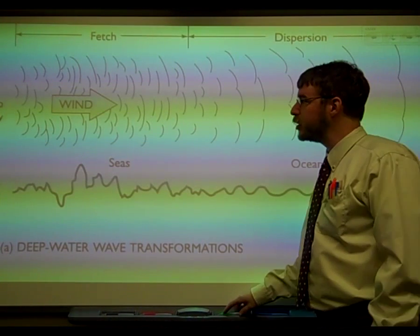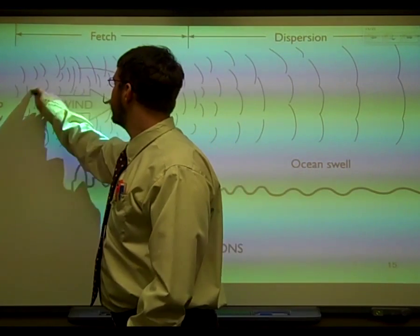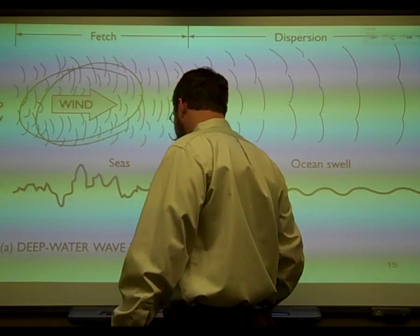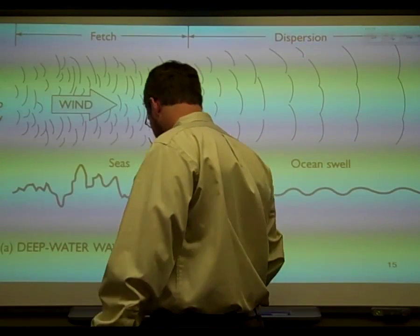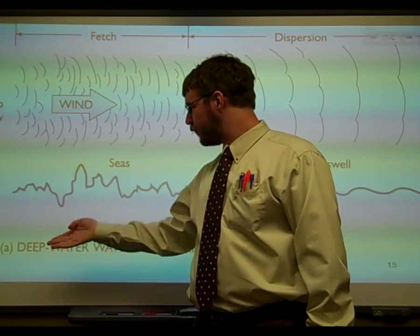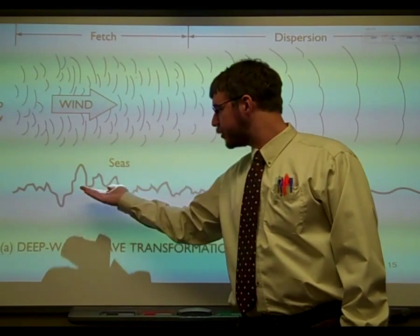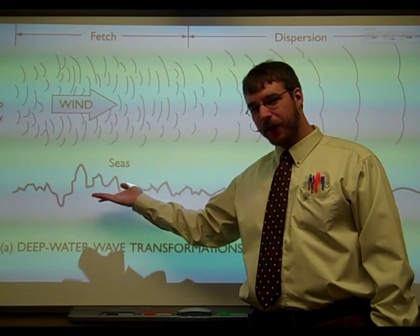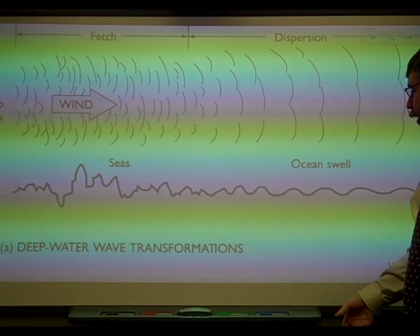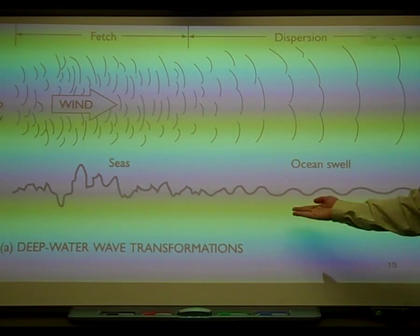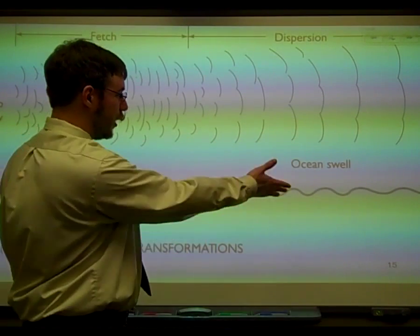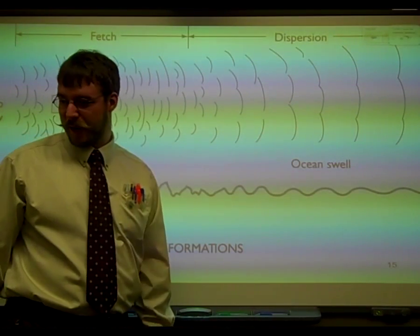Here's a picture showing that same thing. You can see right here where the wind is actually blowing — that is the fetch. In the fetch, the water gets very crazy. And it's over here in the dispersion area where it looks more like a regular wave — the ocean-y, doing ocean swelling type things.